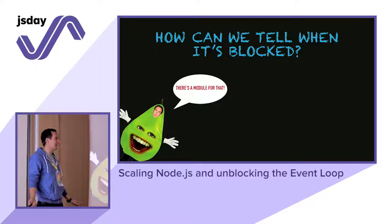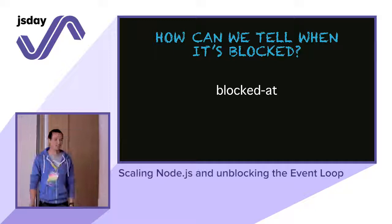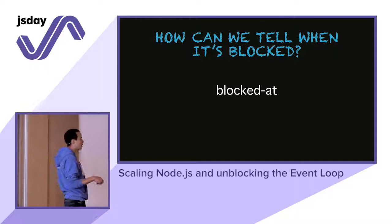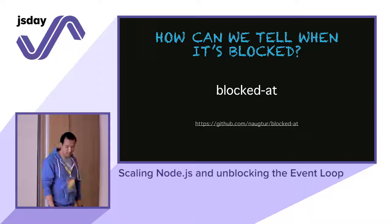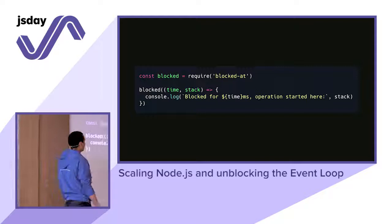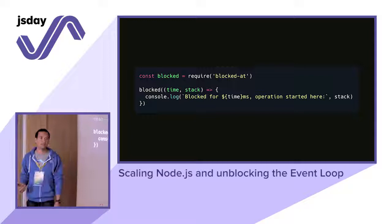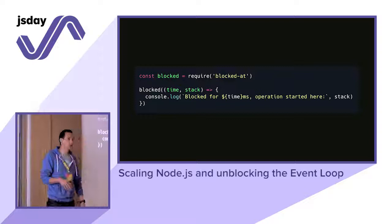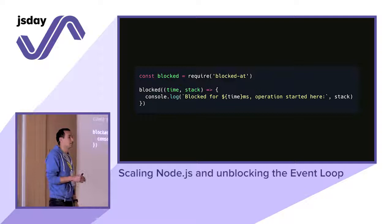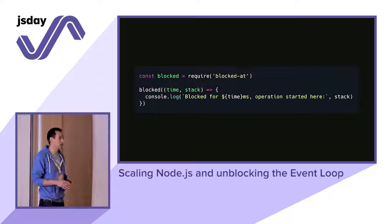How can we tell when the event loop is blocked? There's a module for that — it's called Block.That. Block.That uses async hooks, available from Node 8 and upwards, and it's pretty easy to work with. You just require it and tell it to let you know when it's blocked. All of you should use it at least while developing your app. If you block the event loop, not even the incoming connection will arrive at your app, and you won't get any errors from that.